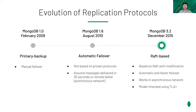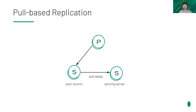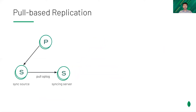All of these replication protocols share a common theme: they are all pull-based replication. Pull-based replication means any replica, called the syncing server, can pull the op-log entries from any other replica, called the sync source. The sync source doesn't have to be the primary. The pull-based model has some advantages over the push-based one. First, it is valued by users because the flexible data transmission can utilize the network more efficiently.